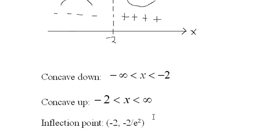And an inflection point at negative 2, negative 2 over e squared. We can think of e as around 3, so this is about negative 2 ninths. By the way, we got that inflection point by putting negative 2 in the original function. So be careful, don't put it in the second derivative—otherwise, you'll just get 0.